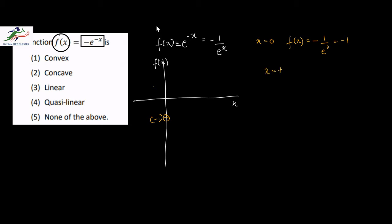Next we put x equal to plus infinity. So f(x) will be equal to minus 1 by e to the power infinity, which is minus 1 by infinity, which is 0. And it is approaching from the negative side, so this curve will go like this.